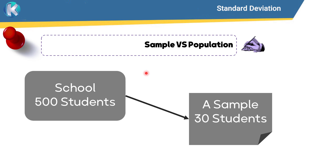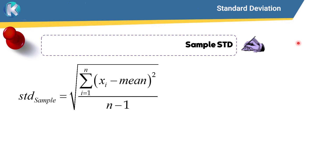We sample 30 students and measure their heights — for example, the mean and standard deviation of their heights — in order to generalize whatever we have achieved in the sample to the population. Studying the population itself is very time-consuming, so it is easier to study a sample and generalize the results.